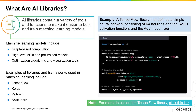The Scikit-Learn library is an open-source machine learning library that provides a wide range of supervised and unsupervised learning algorithms, data preprocessing, and model evaluation tools. It's known for its ease of use and extensive documentation.